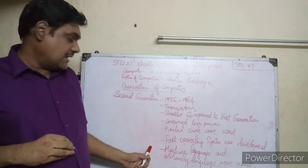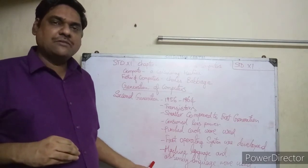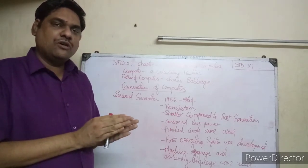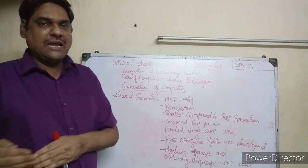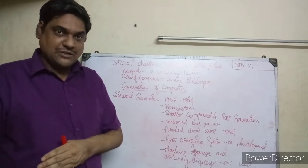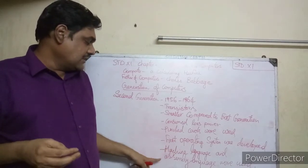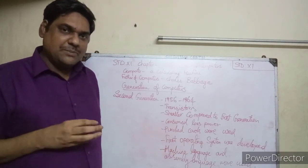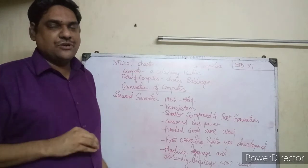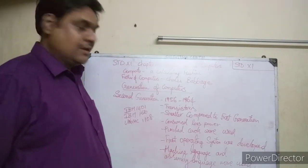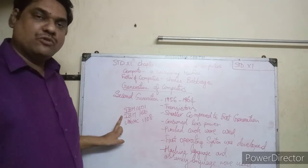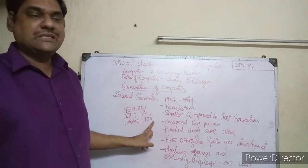The second generation computers also introduced the first operating systems. The programming language used was assembly language - which is a combination of machine language and high-level language. High-level languages include C, C++, Java, and Python. Assembly language is an intermediate language between machine language and high-level language. Examples of second generation computers are IBM 1401, IBM 1620, and UNIVAC 1108.